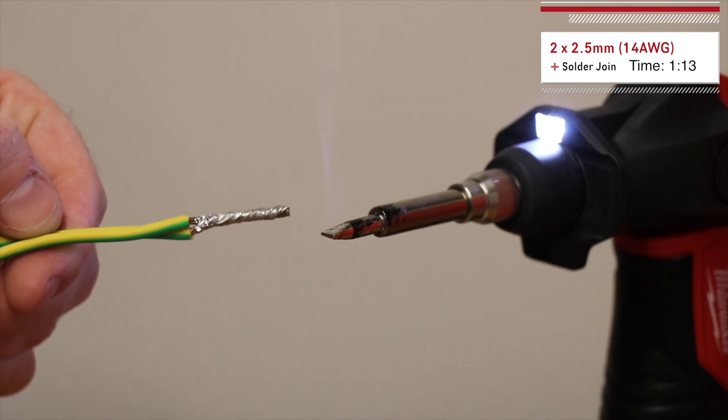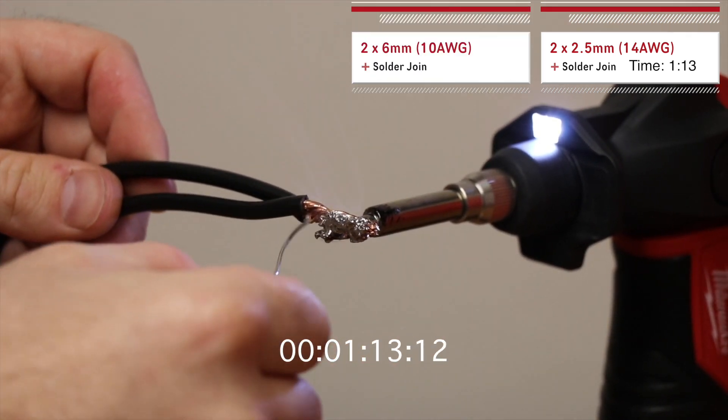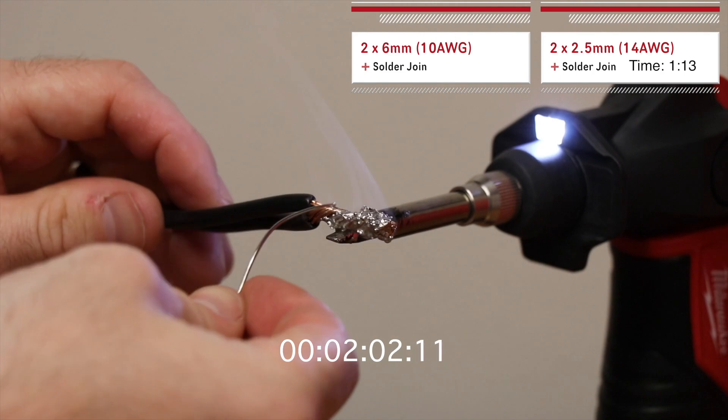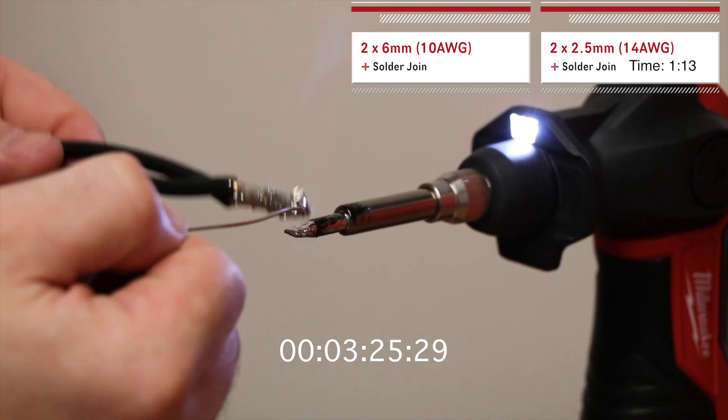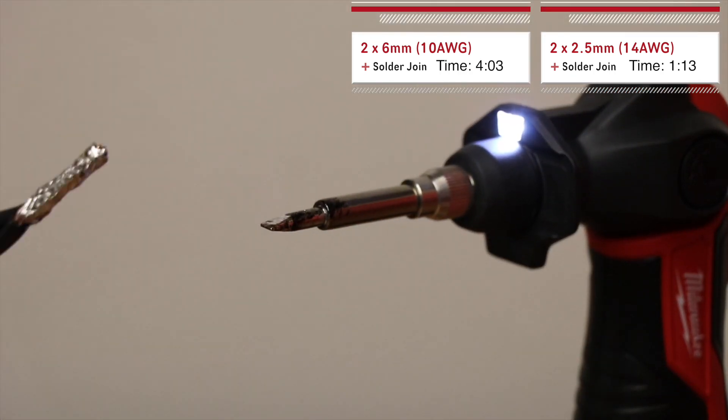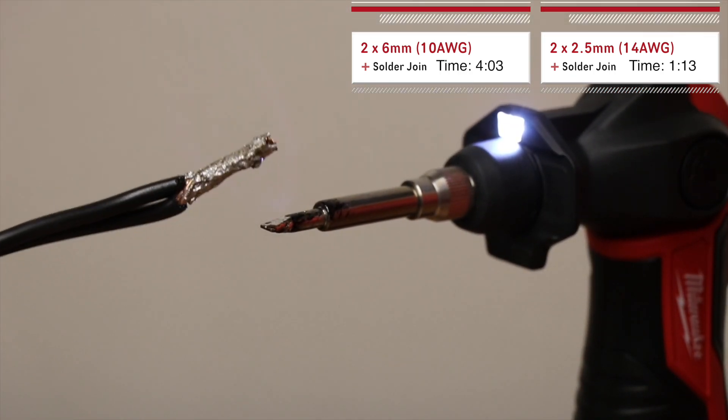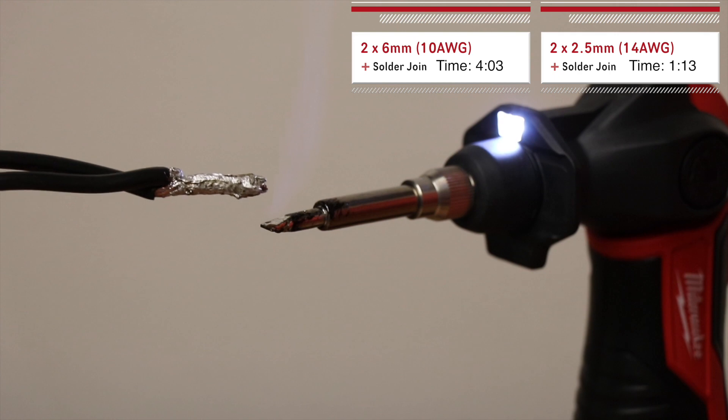I'm getting a bit of heat in there but I can tell there's a big difference between the two cables. It is struggling to transfer the solder onto the wire compared to the 2.5 or 14 AWG. The insulation is getting quite hot on the wire. If you're soldering this cable all day every day this is probably not the product for you. But if you need it to get you out of trouble every now and then, go for it.